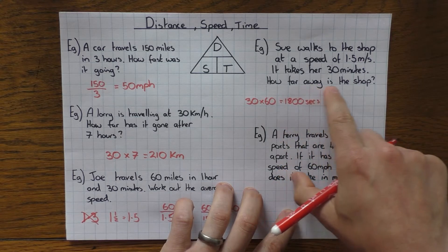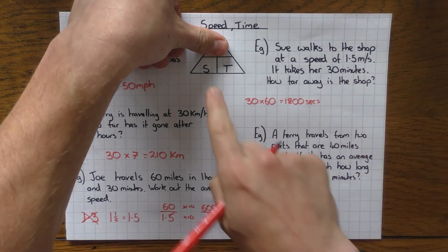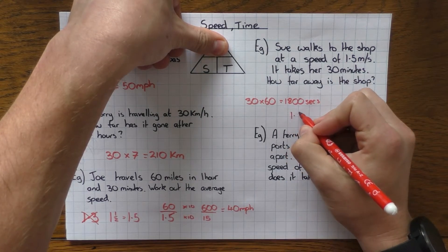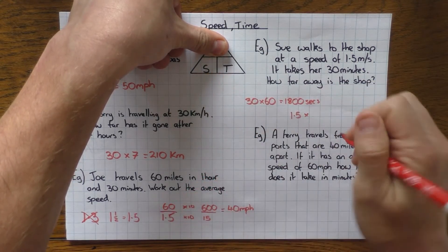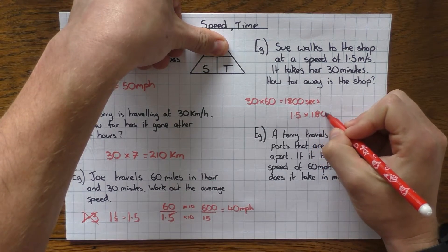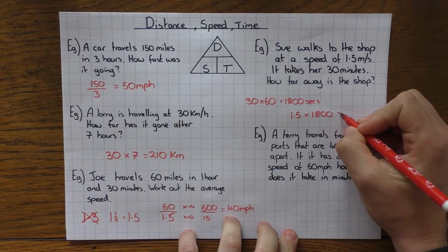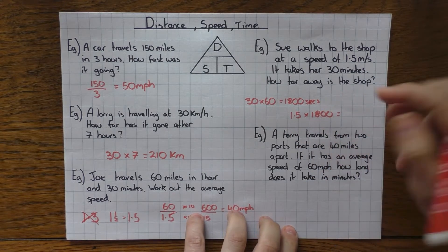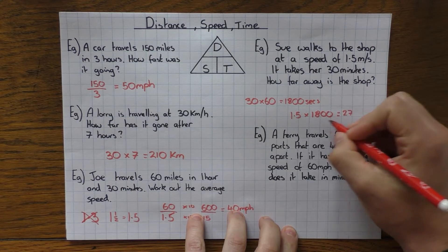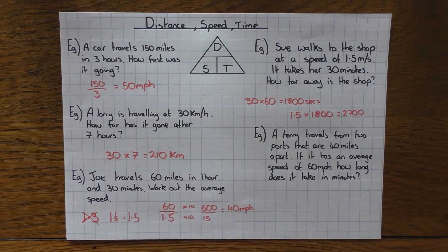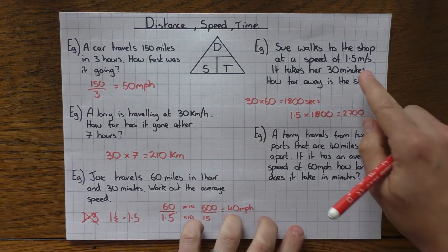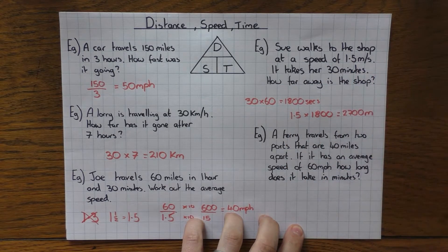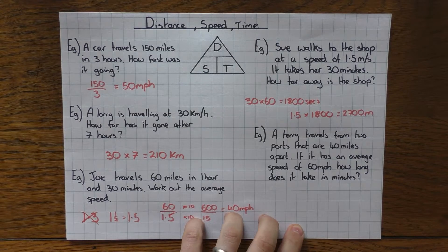So the units now match and it says how far away is the shop? So that's the distance. So I cover up the distance and I'm doing the speed, which is 1.5 meters per second, and then I need to times it by the time, which is 1,800. So if I do 1.5 times 18, that's going to give me 27. And I can add my two zeros. So that's 2,700. And if you want the distance, it was meters per second. So that's going to be meters.